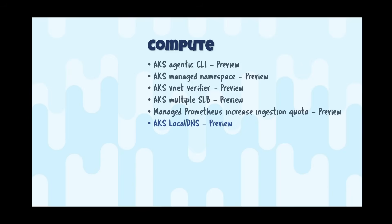AKS local DNS is available in preview. It's a DNS proxy that runs on every node. When deployed, it's invisible to the application but caches DNS lookups and performs resolution from that cache based on a configurable time-to-live. For your pods, this gives faster DNS lookups and removes load on the regular CoreDNS service, since many requests are served from cache.